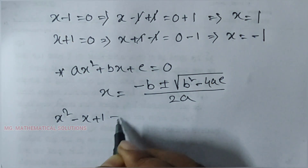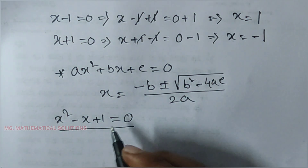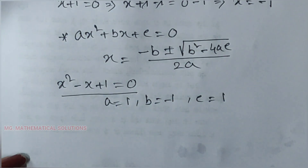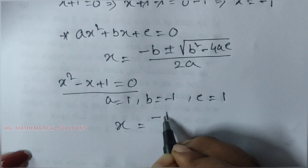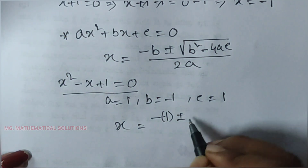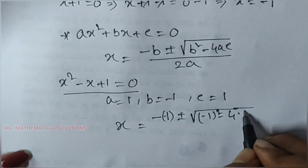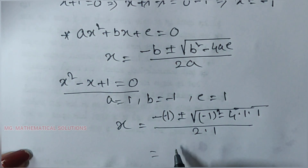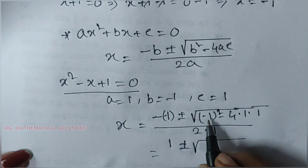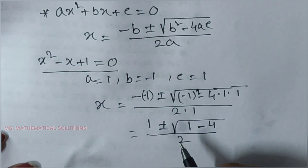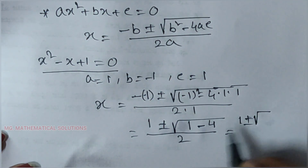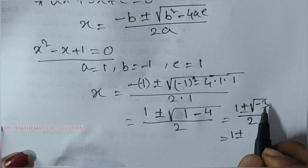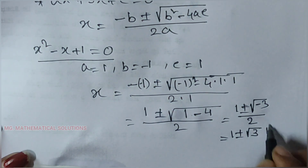Now we solve x² - x + 1 = 0. Here a = 1, b = -1, and c = 1. Using the formula: x equals minus of minus 1, plus or minus root over ((-1)² - 4·1·1), divided by 2·1. That gives 1 plus or minus root over (1 - 4), which equals 1 plus or minus root over minus 3, divided by 2. Since root of minus 1 is i, we get x equal to (1 ± √3·i) / 2.